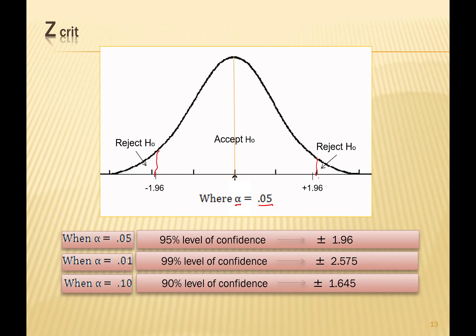If your Z-obtained falls within plus or minus 1.96, which is the acceptance region, we accept the null hypothesis and say it is true. If our Z-obtained falls outside plus 1.96 or negative 1.96 — these tails, which we call the rejection region or critical region — then we simply reject the null hypothesis. We're always talking about the null hypothesis because that's what we're testing. We never test the alternative hypothesis because we know what to do with it once we accept or reject the null, since they are exact opposite statements.